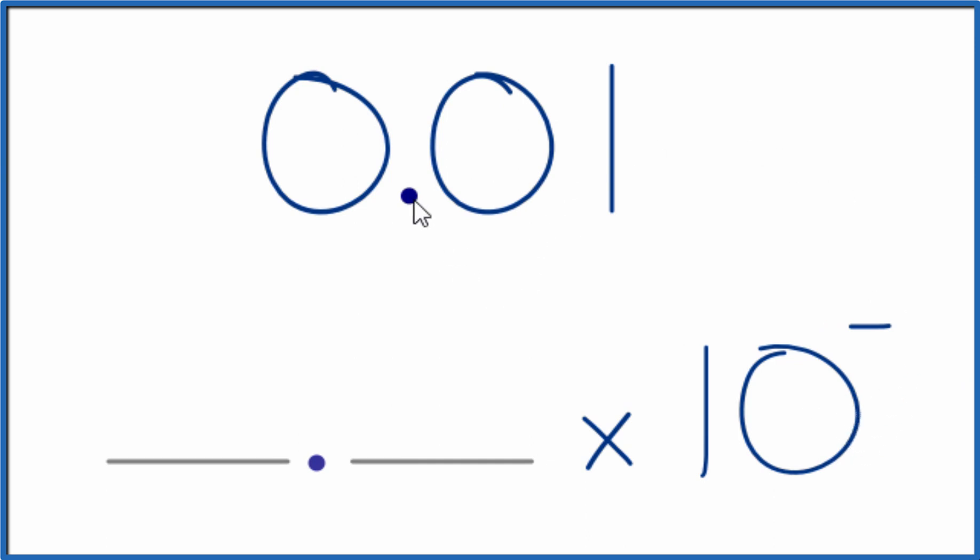So what we'll do is take our decimal point and move it 1, 2. So we moved it two places and now we have a whole number here. And since we moved it two places, we write two right here.